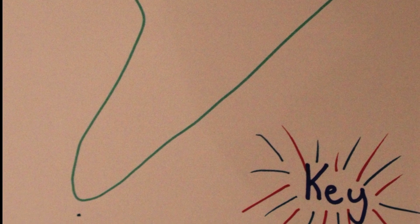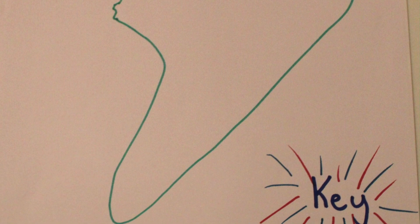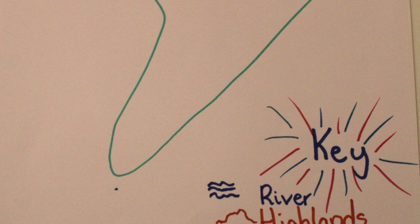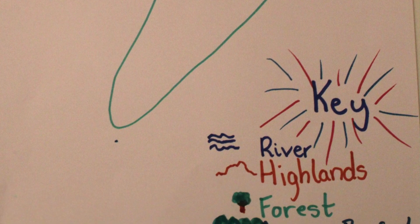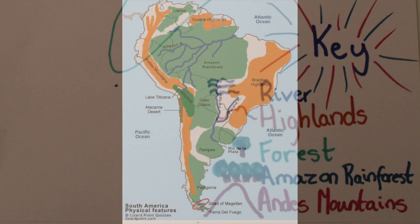Next, find a section on your piece of paper to create the key for your map. Then create the titles and the images that you would like to use for your map. You can do it just like the example that I've done here, or create your own pictures and representations that you would like.